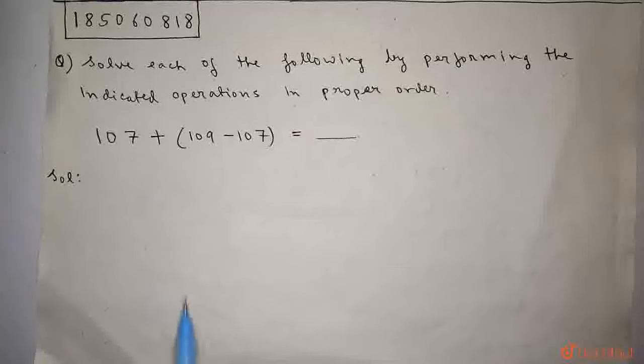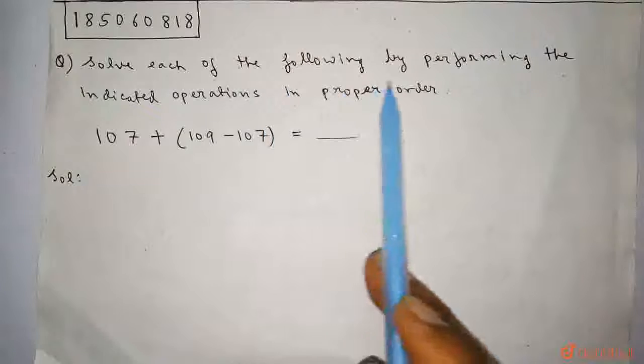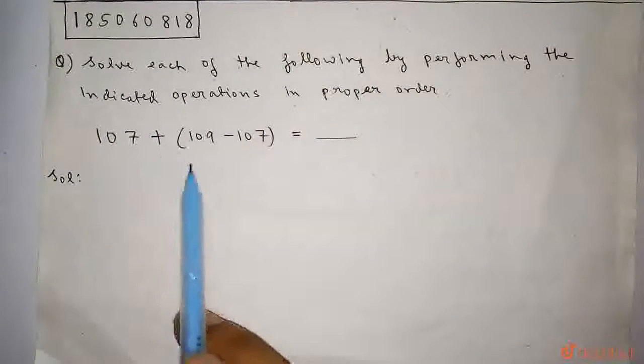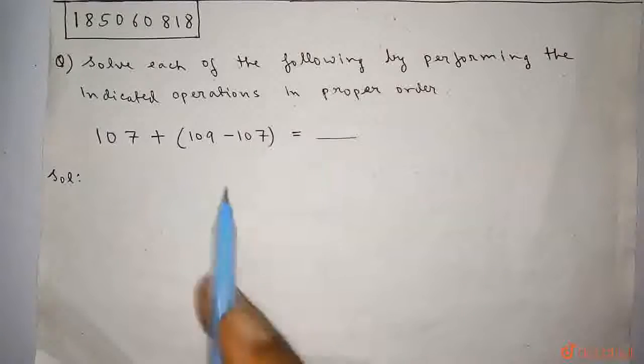In this problem it is asked, solve each of the following by performing the indicated operations in proper order. 107 plus in bracket 109 minus 107 equals to what?